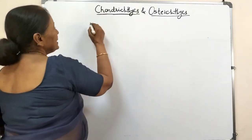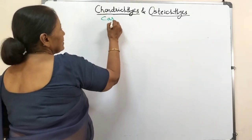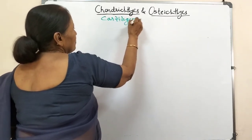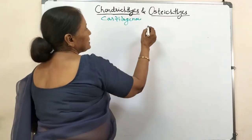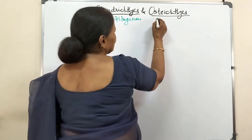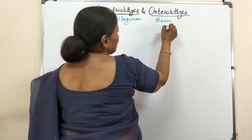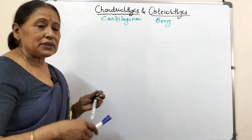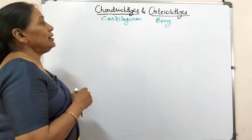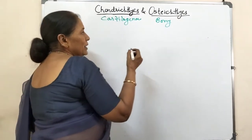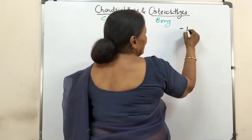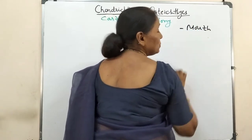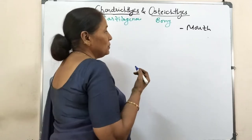Chondrichthyes are cartilaginous fishes, whereas Osteichthyes are the bony fishes. There are many differences between Chondrichthyes and Osteichthyes, like the difference in their mouth position.